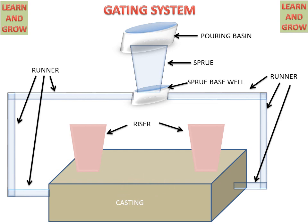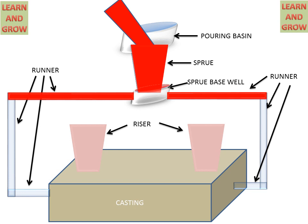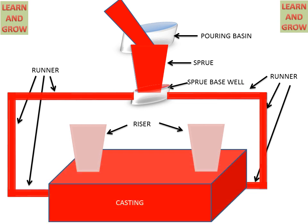The riser provides molten metal to compensate for the shrinkage of the metal after cooling. Now we will see the process of the gating system. Molten metal is filled in the pouring basin, then by the sprue it reaches the sprue base well, where it is distributed to the runners, and from the runners it goes to the casting.